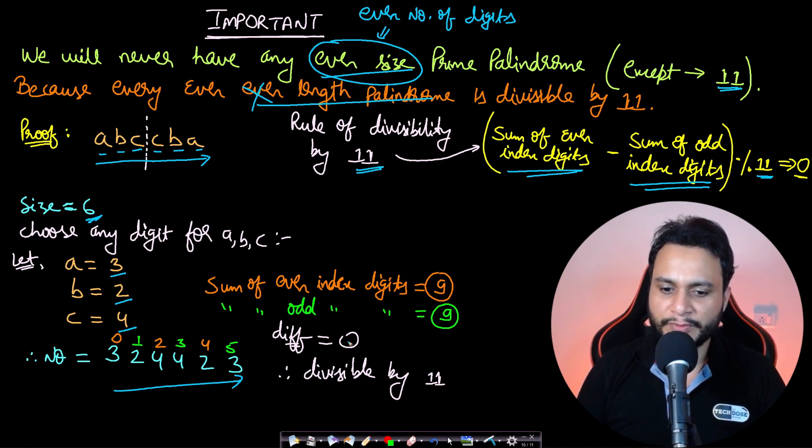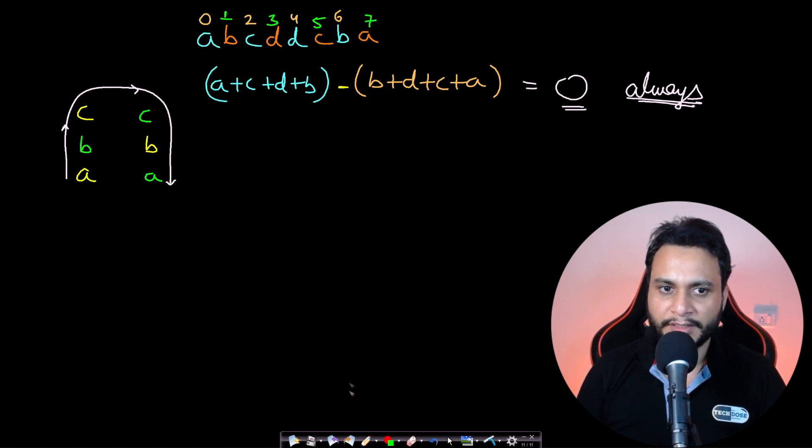If you form an even length number which is a palindrome, the difference will always be 0. In this case, the sum of even index digits like 3 plus 4 plus 2 equals 9, and the sum of odd index digits is 2 plus 4 plus 3, which is again 9. If you take the difference, it equals 0.